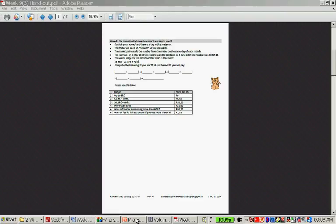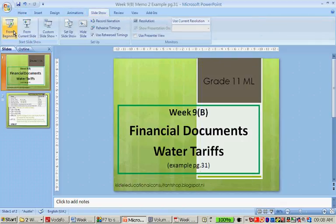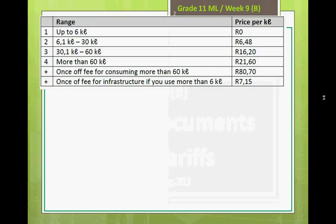So let's go to the answer. The answer is also included as a memo. This is the answer for that question — this is the tariff system. If you use up to 6 kilolitres, you don't pay anything for water. If you use more than 6 kilolitres but less than 30 kilolitres, you will pay 6.48 per kilolitre.